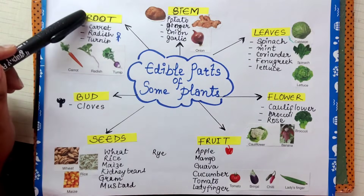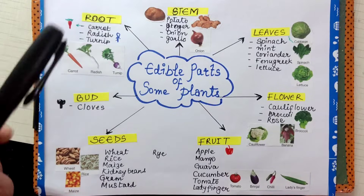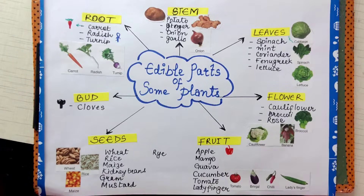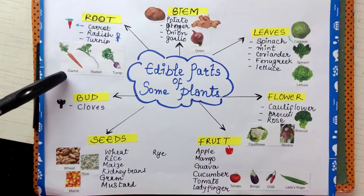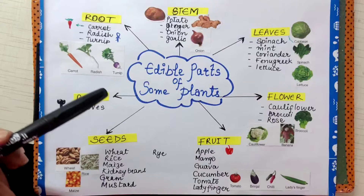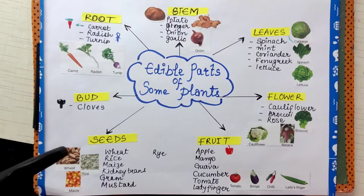The first edible part is the root. Examples which come to mind are carrot, radish, and turnip.